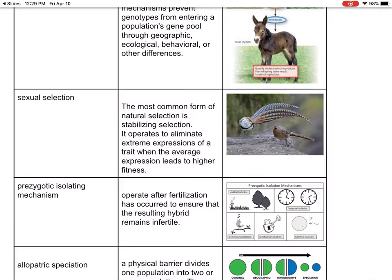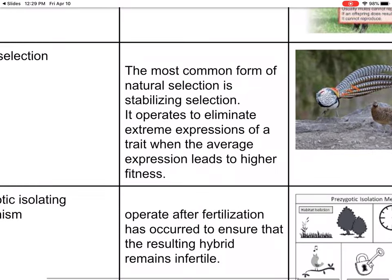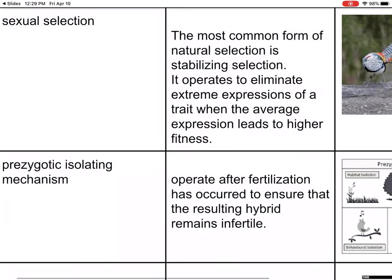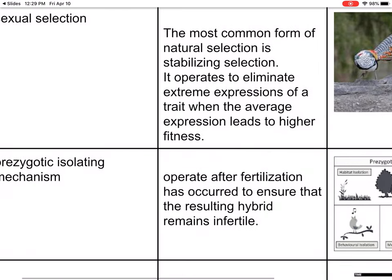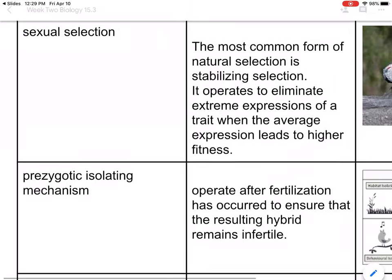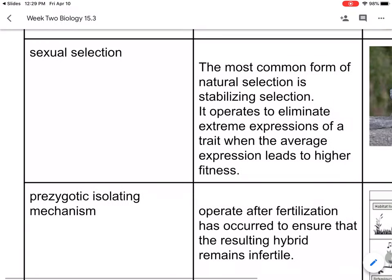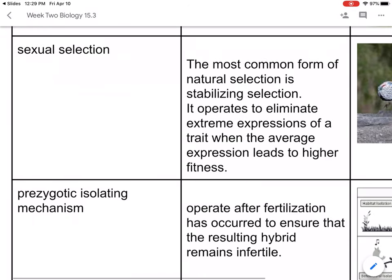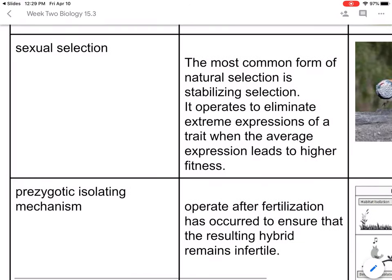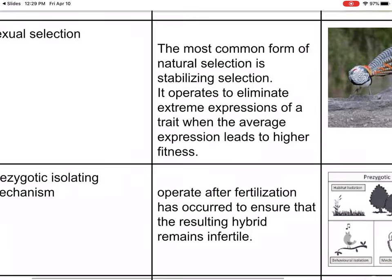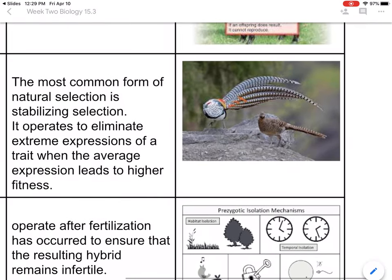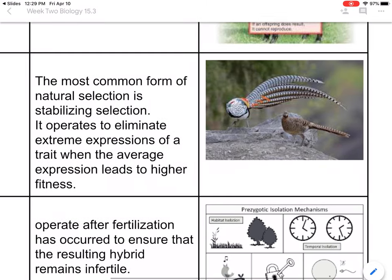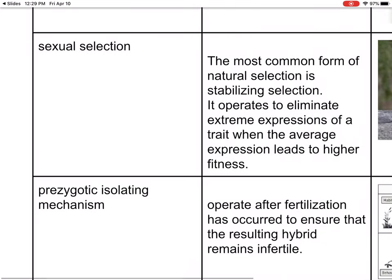Sexual selection: the most common form of natural selection is stabilizing selection — it operates to eliminate extreme expressions of a trait when the average expression leads to higher fitness. I have sexual selection and stabilizing selection here, and I think I may have made an error, so let's skip that one and I'll come back to it in the next video.